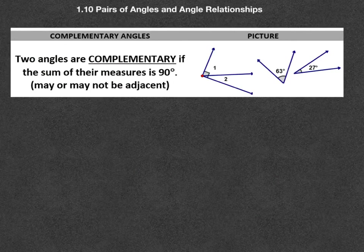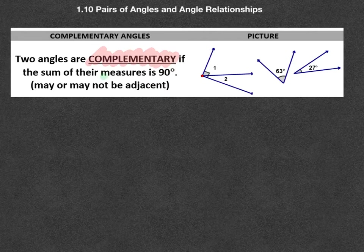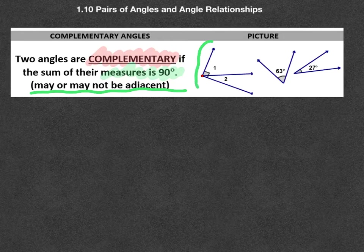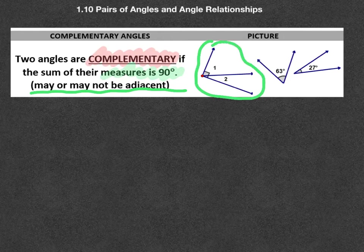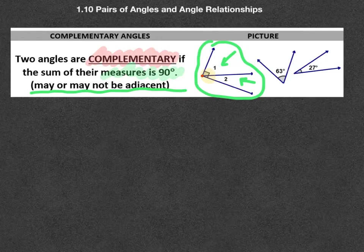Another set of pairs of angles are called complement or complementary angles. These are guys that will add up together to 90 degrees. And as it says here, make sure you understand that it may or may not be adjacent. So it may look like this where they are adjacent. Angle 1 and angle 2 together add up to 90. How do I know they add up to 90? Well, take a look right here. You see it adds to 90.